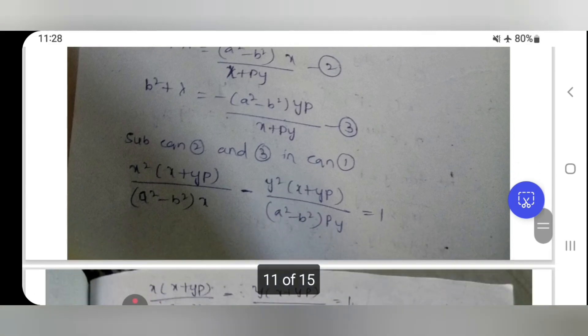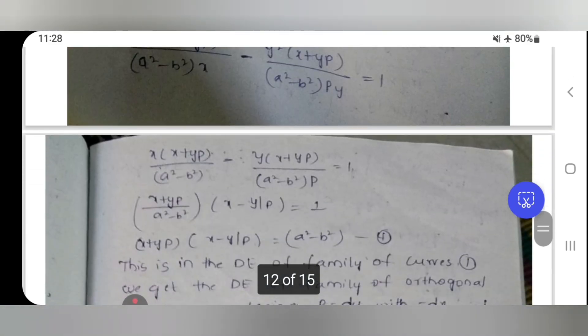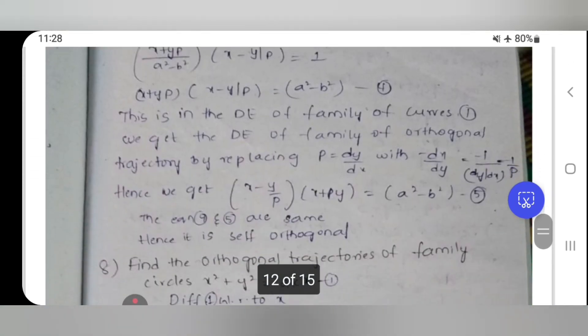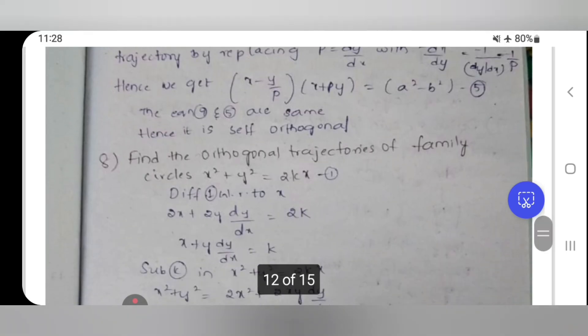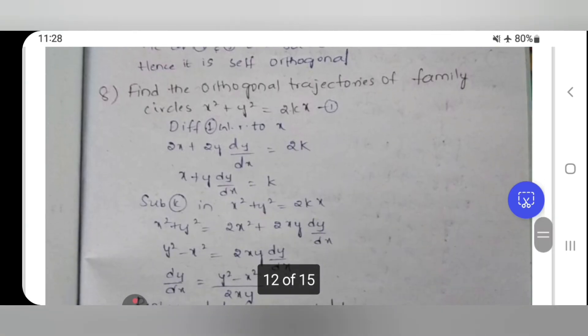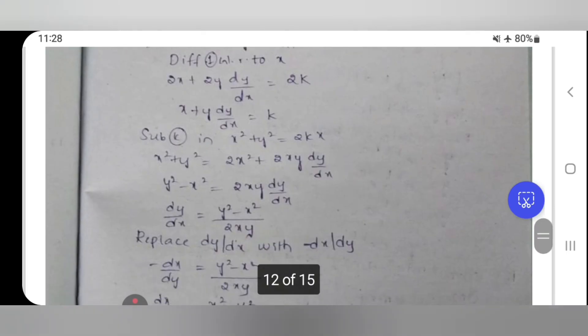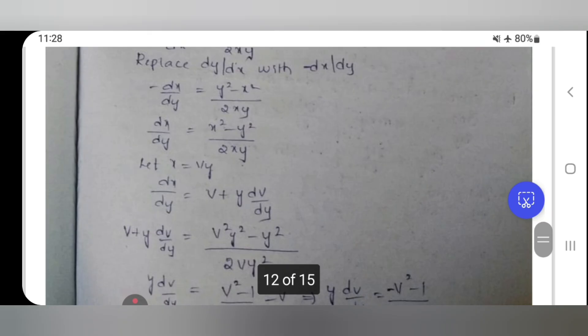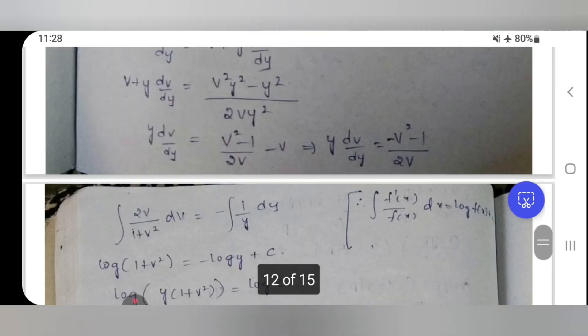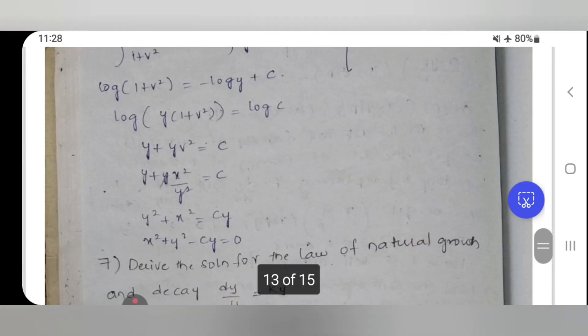Exact, non-exact—definitely you will have one question—and linear Bernoulli one, Newton's law of cooling, law of natural growth and decay is one, and orthogonal trajectories is one. These are the main important topics in your first unit.